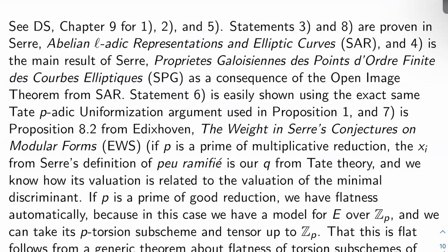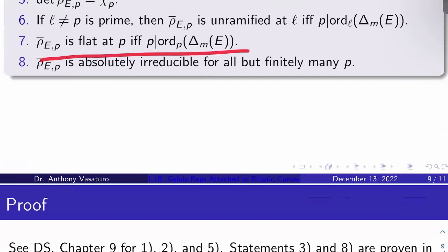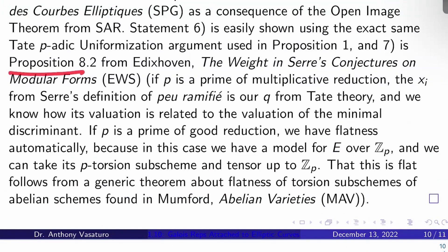For the proof, I'll give a ton of references, as many of these statements are quite difficult. Diamond and Shurman chapter 9 covers parts 1, 2, and 5. Parts 3 and 8 are among, if not the main results in Serre's green book, 'Abelian L-adic Representations and Elliptic Curves,' which I'll call SAR. Part 4 is the main result of the follow-up paper by Serre, 'Galois Properties of Points of Finite Order,' called SPG, and is essentially a consequence of what happens in the green book with more work. Statement 6 is shown using essentially the same Tate P-adic uniformization argument used to prove the proposition about the Frey curve. Statement 7, the flatness result, is covered in Proposition 8.2 from Edixhoven's 'The Weight in Serre's Conjecture on Modular Forms,' which I'll call EWS.